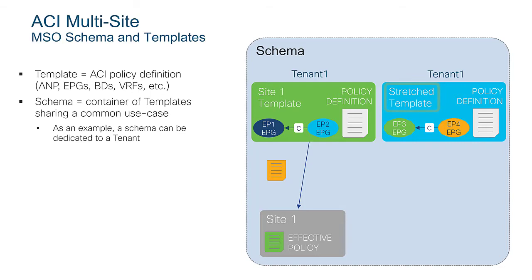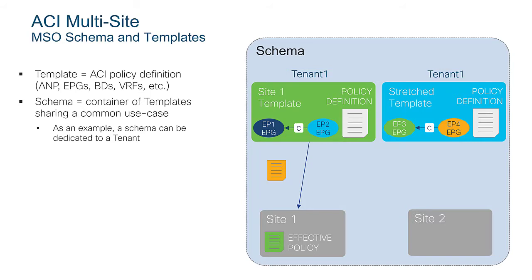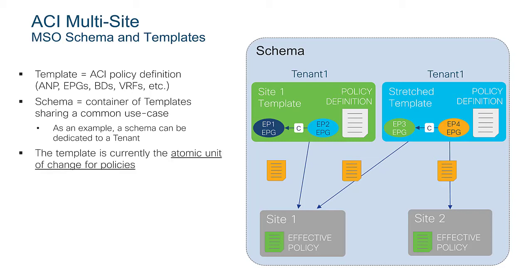I could then define another template — a stretch template — map it to the same tenant, and define inside it all the objects I want to exist across site one and site two at the same time. That means I associate that template to both site one and site two. When I deploy the template, the policy and configuration will be pushed simultaneously to site one and site two and rendered at the ACI level. The template represents the atomic unit of change: when I deploy a template, that configuration is always pushed at the same time to all sites mapped to that template.